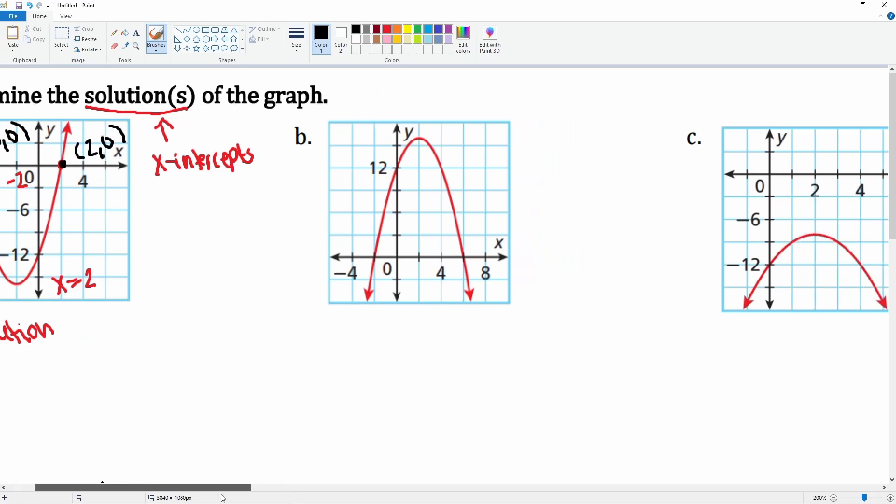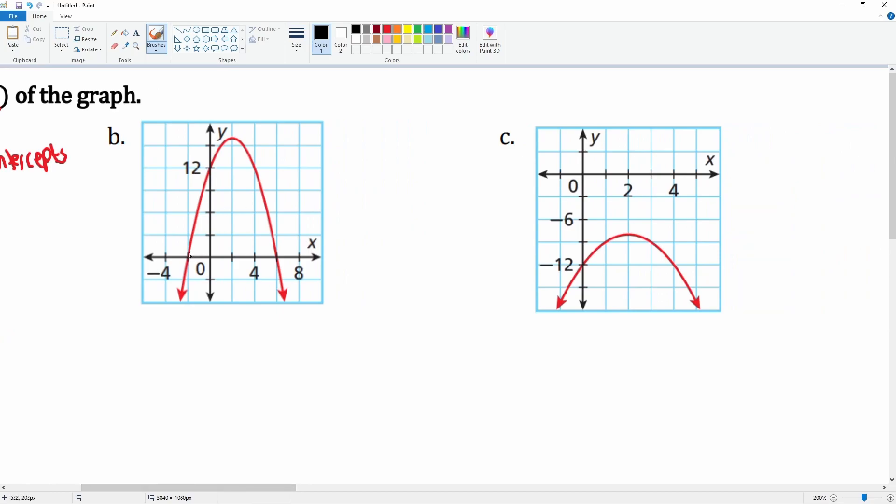You'll just have to be careful with the scale. Let's do b. This is by twos.